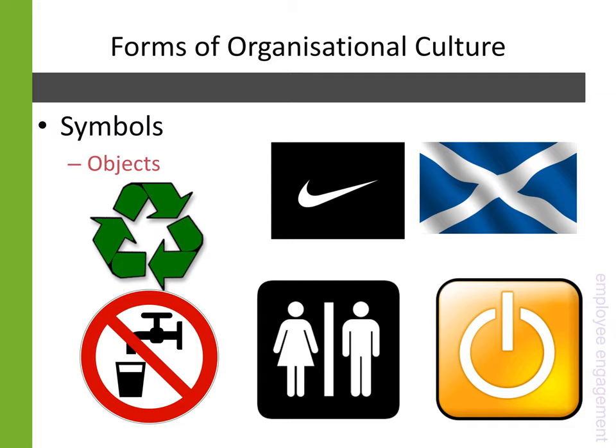The first form of organizational culture are symbols. When we talk about organizational cultures being symbolic, we can be quite literal in terms of the types of symbols an organization uses to represent itself and to embody what the organization means. The first type of symbols can be objects — these could be flags, they could be the logo, or what's displayed about the organization that carries meaning to it.